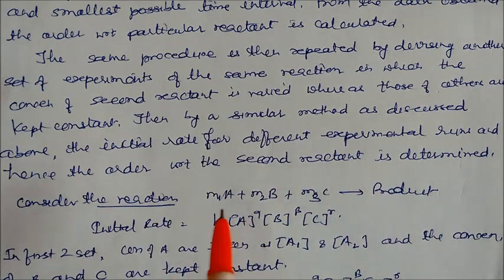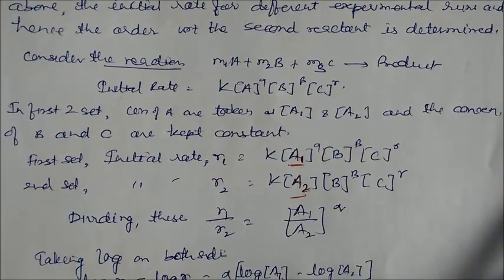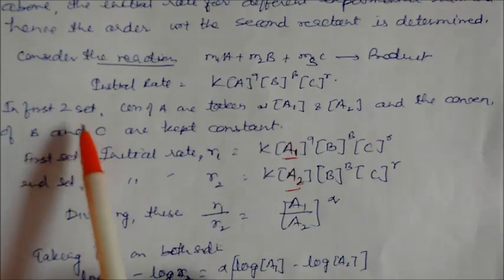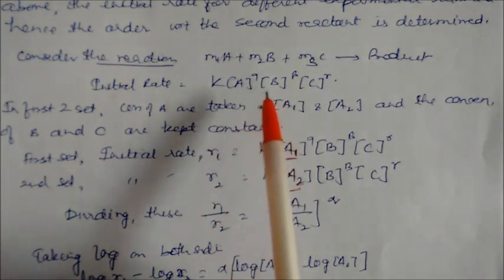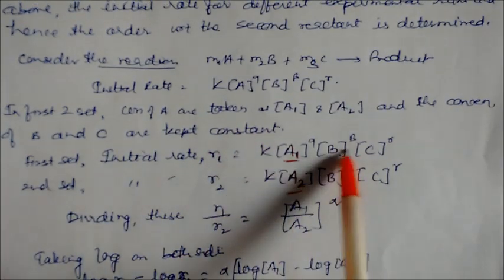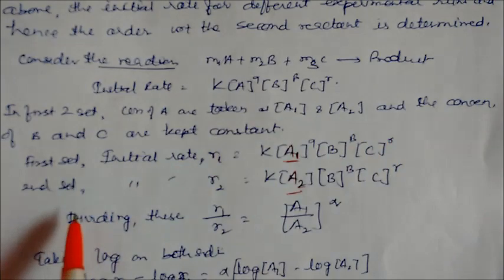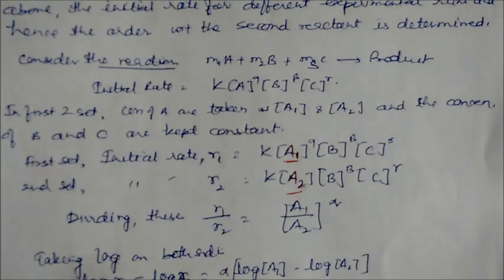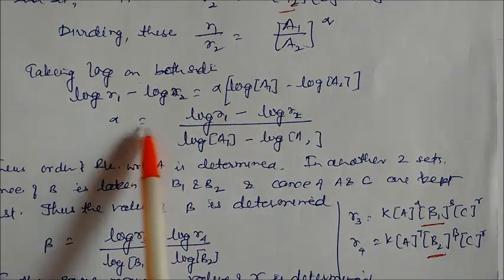For example, for the reaction M1, M2, M3 giving product, the initial rate is k[A]^α[B]^β[C]^γ. In the first two sets of experiments, concentration of A is varied as a1 and a2 while B and C are kept constant. So r1/r2 equals (a1/a2)^α. Taking log: α equals log(r1/r2) divided by log(a1/a2). The order with respect to B is determined similarly by varying B while A and C are kept constant to obtain β.